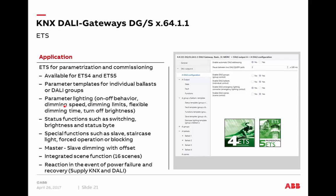Typical parameters include on-off behavior, switch-on and switch-off behavior, dimming speed, dimming limits, and turn-off brightness. A lot of status information can be enabled and sent on the bus as telegrams. Further functions include slave function, staircase function, forced operation — such as setting a lamp to a fixed level like 70% — and blocking channels or ballasts. Master-slave dimming allows one master to also control a slave circuit in parallel, potentially with an offset so the slave channel dims to a lower level.